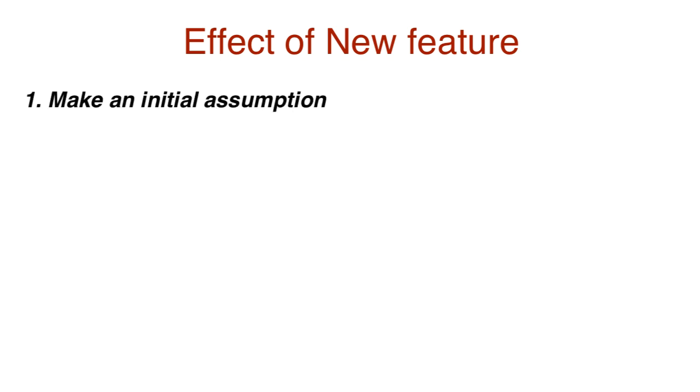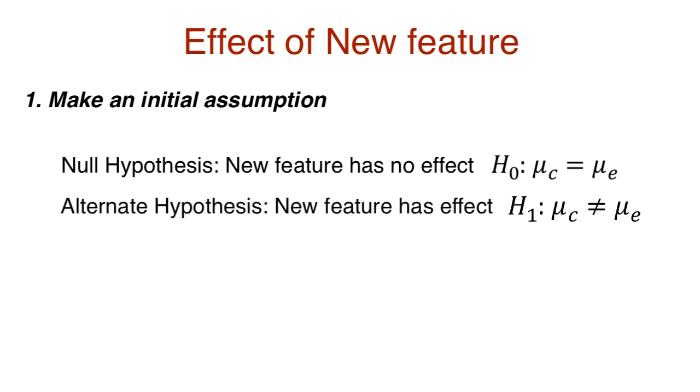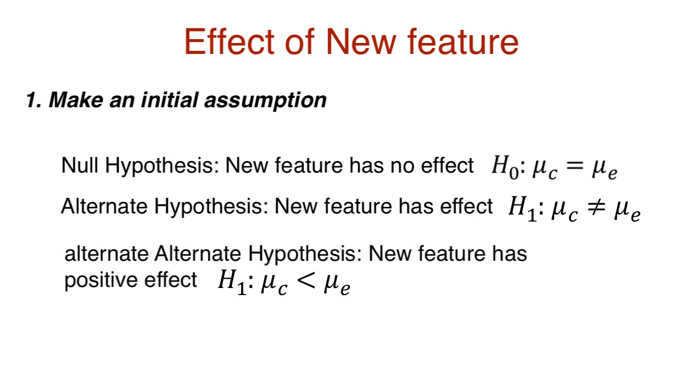First, come up with the initial assumption. Our initial assumption, the null hypothesis, would be that the new feature has no effect. Since we compare mean values, it is stated as the mean of the control users is equal to the mean of the experiment users. And the alternate hypothesis is just that the means are unequal. Note here I could have also stated the null hypothesis such that I just check if the mean of the experiment group is greater than that of the control group, instead of equal to. However, this would hide the negative effect of the new feature, if any.